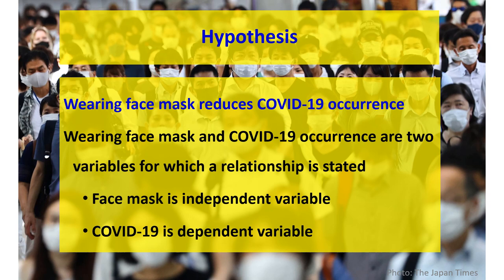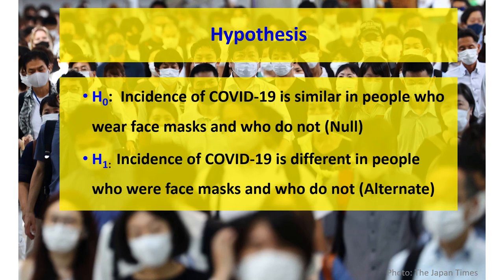Now let's discuss study hypothesis. For example: wearing a face mask reduces COVID-19 occurrence. This is a hypothesis — an assumption we are going to test through our study. Wearing a face mask and COVID-19 occurrence are two variables for which a relationship is stated. Face mask is the independent variable; COVID-19 occurrence is the dependent variable. The null hypothesis states there is no association — that the incidence of COVID-19 is similar in people who wear face masks and those who do not.